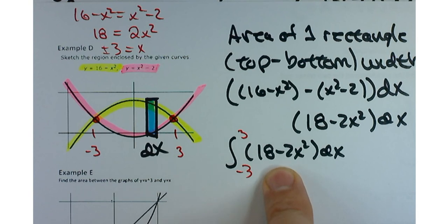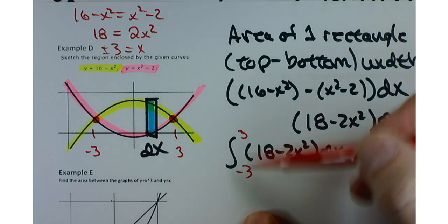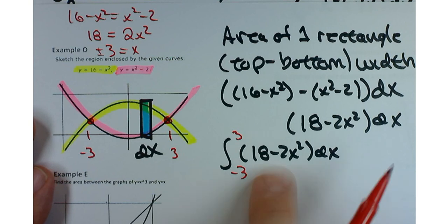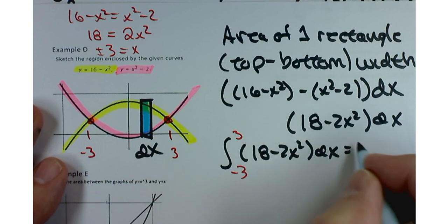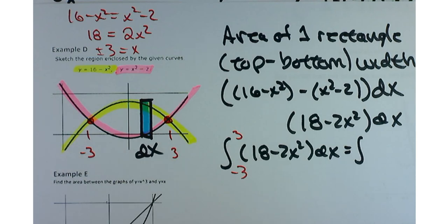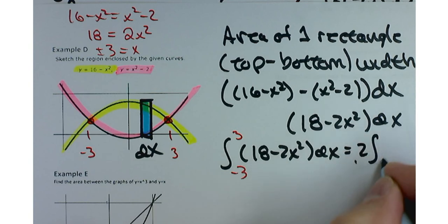Negative 3 and plus 3 would be your limits of integration. Let me notice something else for you about this particular problem. 18 minus 2x squared is an even function, and the reason I notice that is because we've got a symmetric interval. In this particular case, I'm going to let you use your graphing calculator to calculate this.